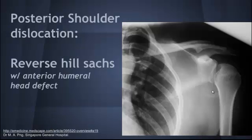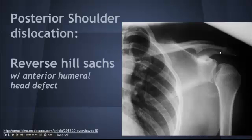You can also have what's called a reverse Hill-Sachs, which is an anterior humeral head defect occurring with a posterior shoulder dislocation. Same mechanism — as the humeral head dislocates posteriorly, it impacts and causes a cortical deformity in the humeral head, just in a different location.